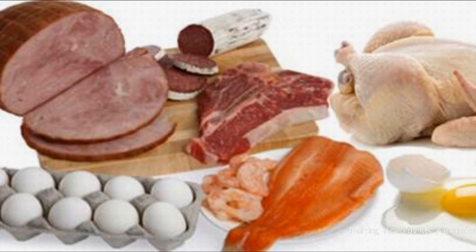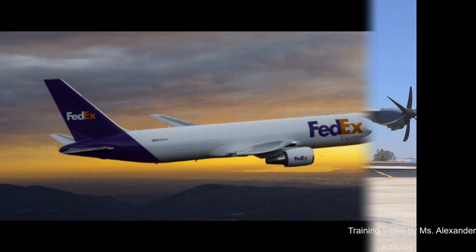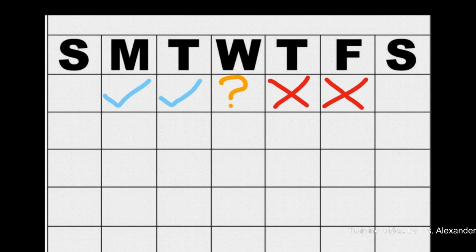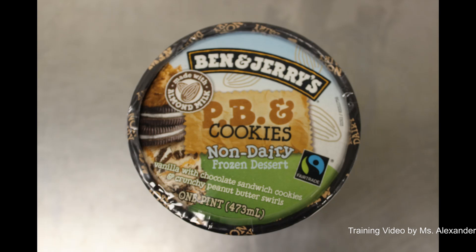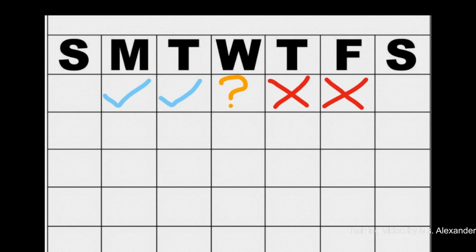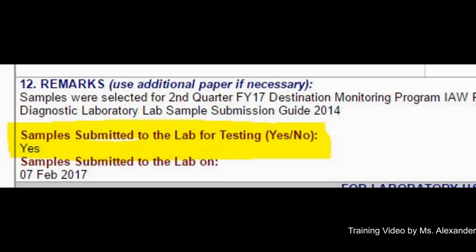Ship perishable samples by overnight or next-day delivery using FedEx or other means. Whenever possible, do not ship chilled or frozen samples on a Thursday for Friday delivery unless directed by the lab. Make sure to notify the laboratory whenever a shipment is made and change your DA Form 7539 from 'no' to 'yes' in the remarks section of samples submitted to the lab for testing.